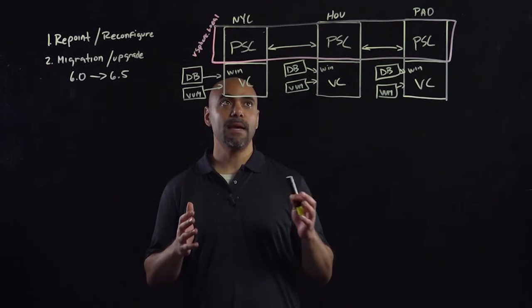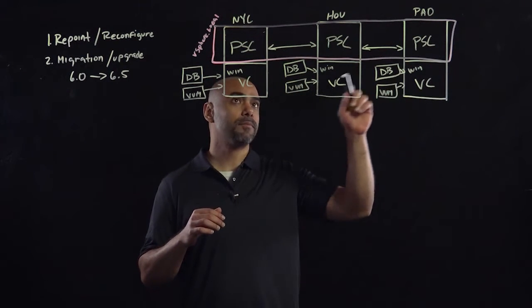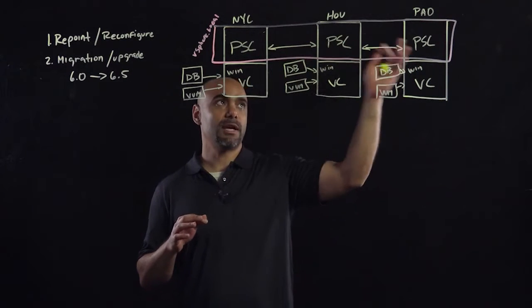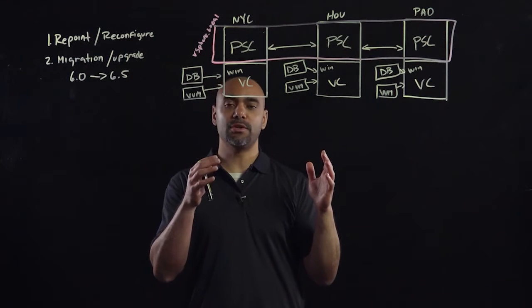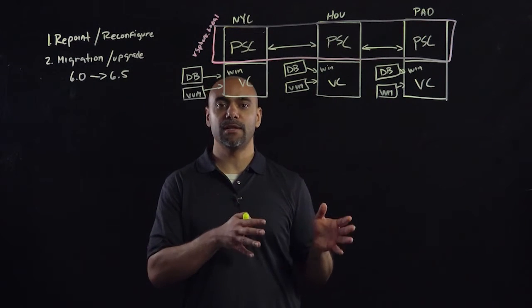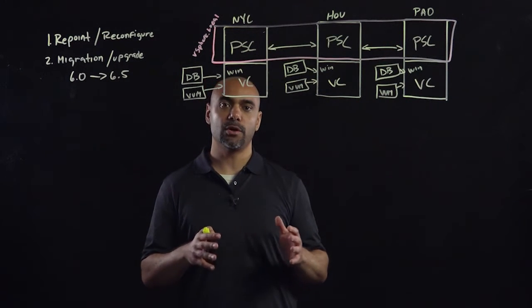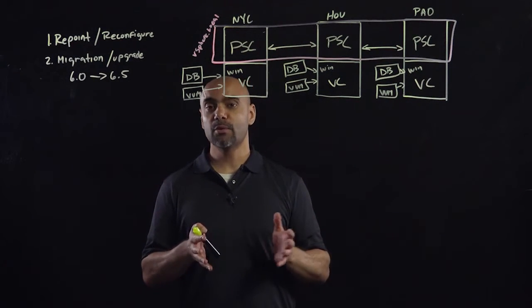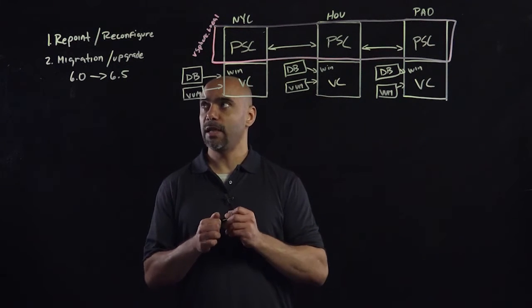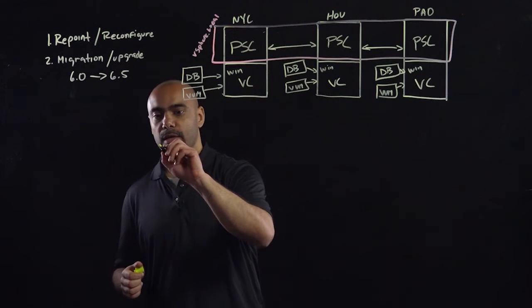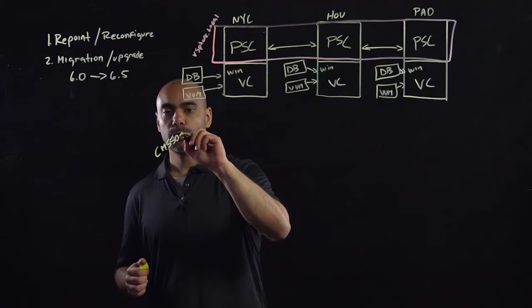I have an embedded replicating type topology within the same SSO domain, multi-site, and what I want to do is, since this is considered deprecated, we want to make sure we get out of this deprecated topology into a supported topology before we even start our upgrade or migration. So the first thing we're going to do is what's called a repoint reconfigure using CMSSOutil.